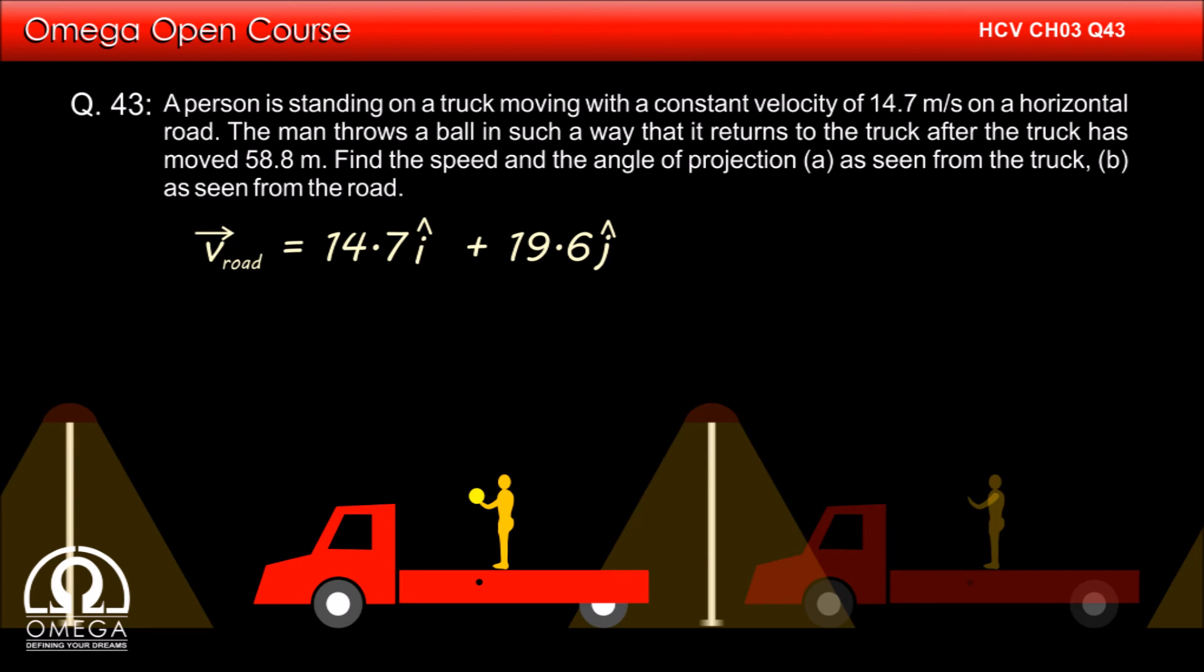Therefore, the velocity of the ball with respect to the road is 14.7i plus 19.6j. Therefore, the speed will be square root of 14.7 square plus 19.6 square, that is equal to 24.5 meters per second.